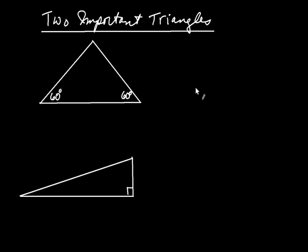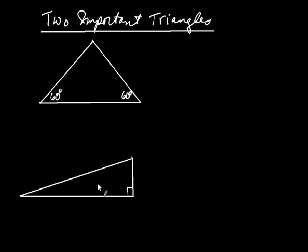It turns out that in trig, two triangles appear over and over. I want to introduce you to those triangles now. This is going to be the first triangle down here, and we're just going to use this to motivate the relationships that we see.